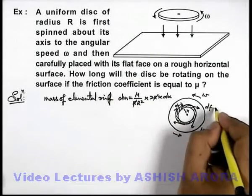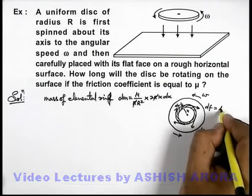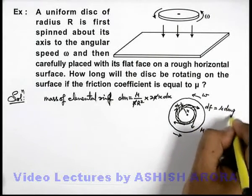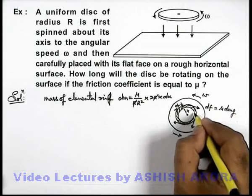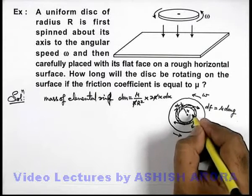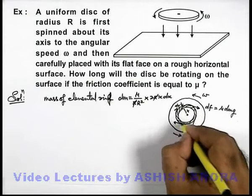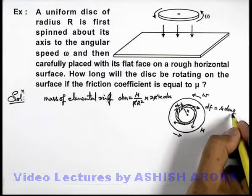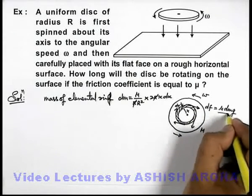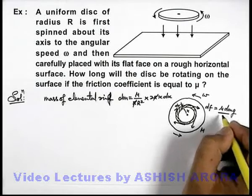The force of friction which is tangentially acting on it can be written as μ dm g, because the normal reaction contribution in normal reaction due to the weight of this ring will be dm g, so friction will be μ dm g.